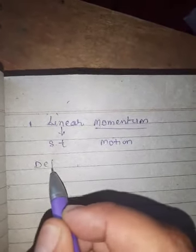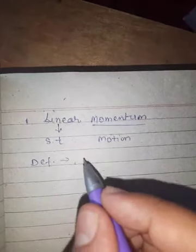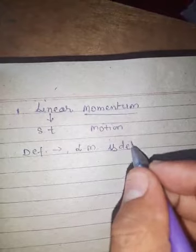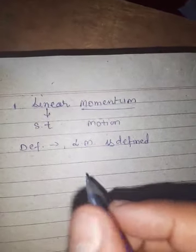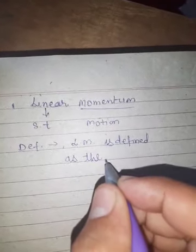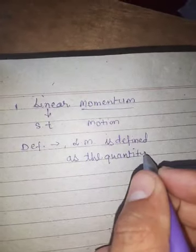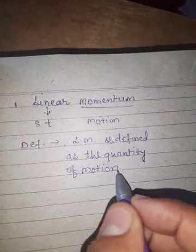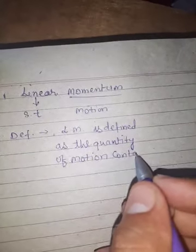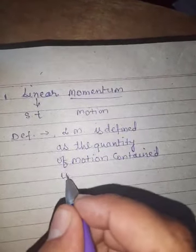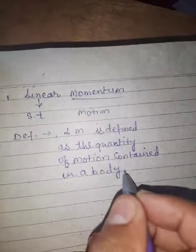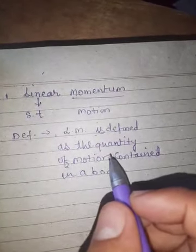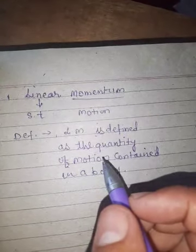First of all, I am telling the definition of linear momentum. Linear momentum is defined as the quantity — we can say that is one kind of physical quantity — of motion content in a body. We can say, if any body contains motion, means moving from one place to another place, we can include that quantity in linear momentum.